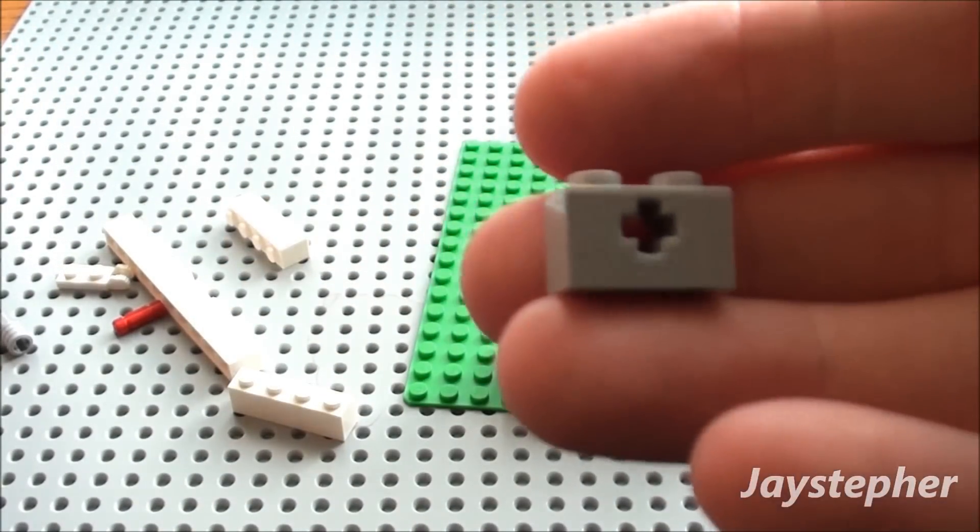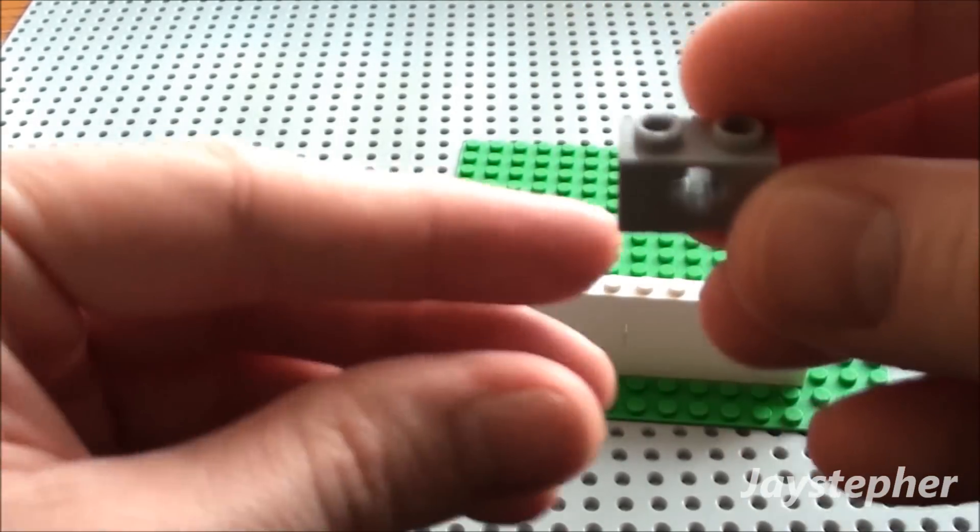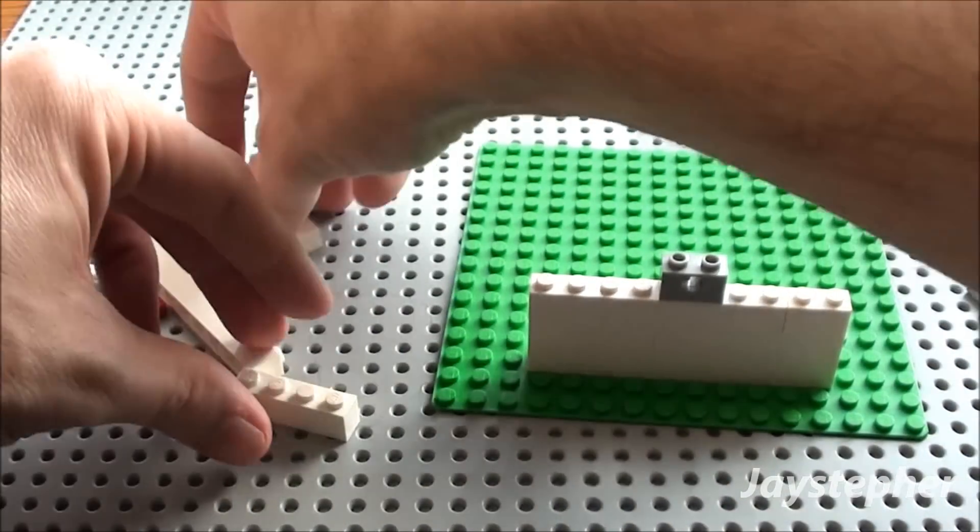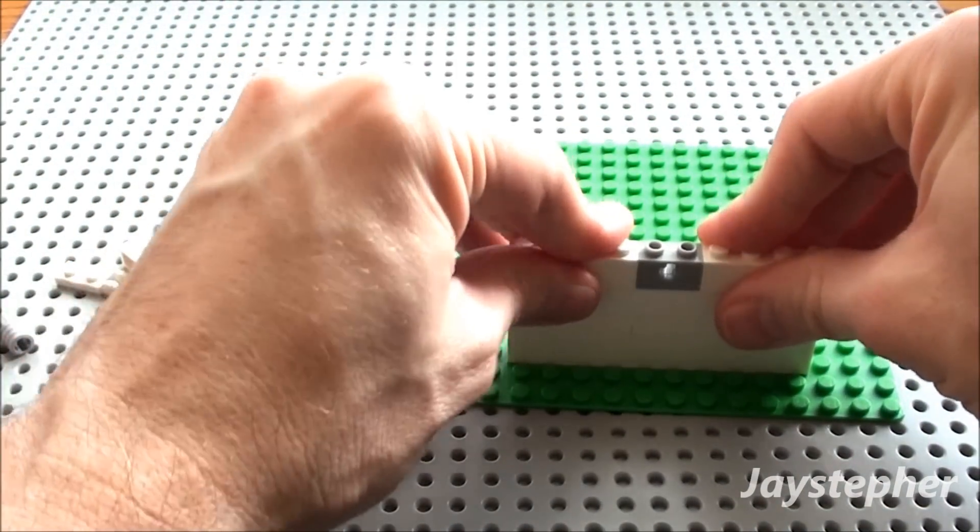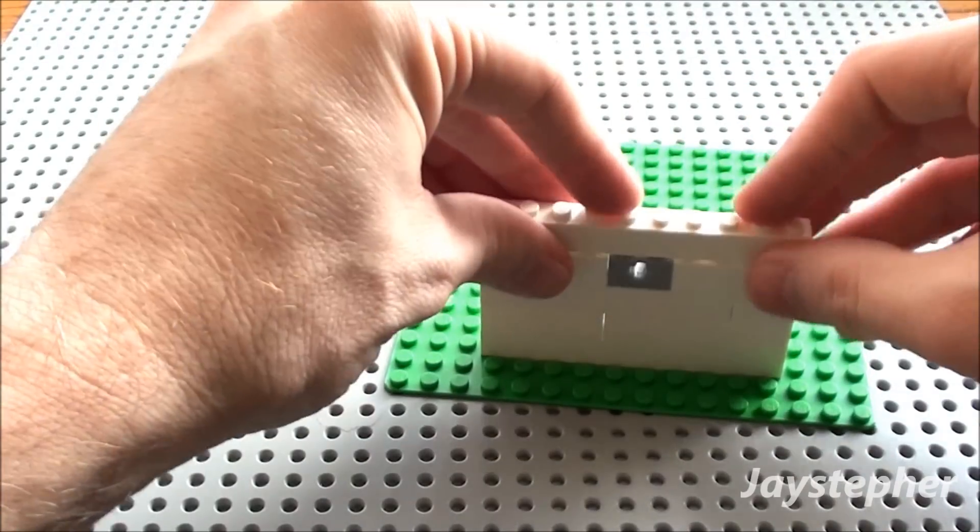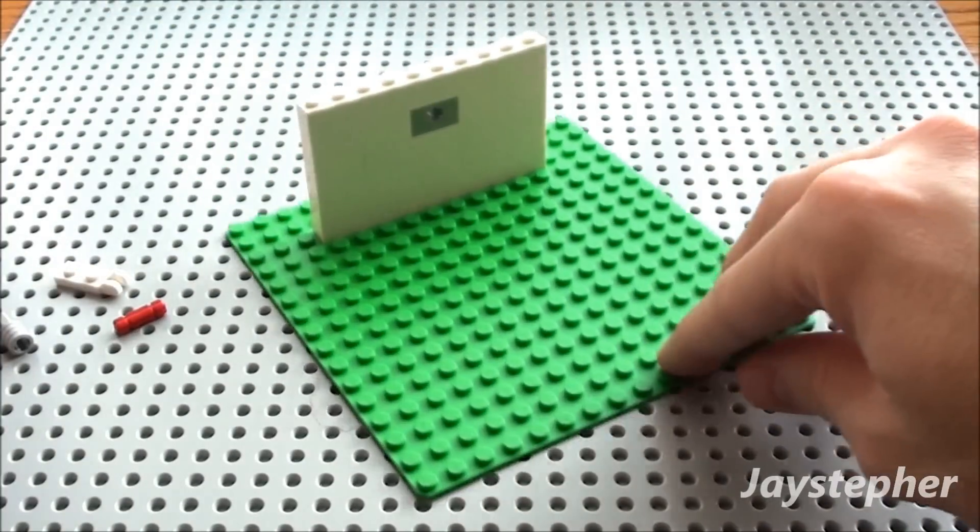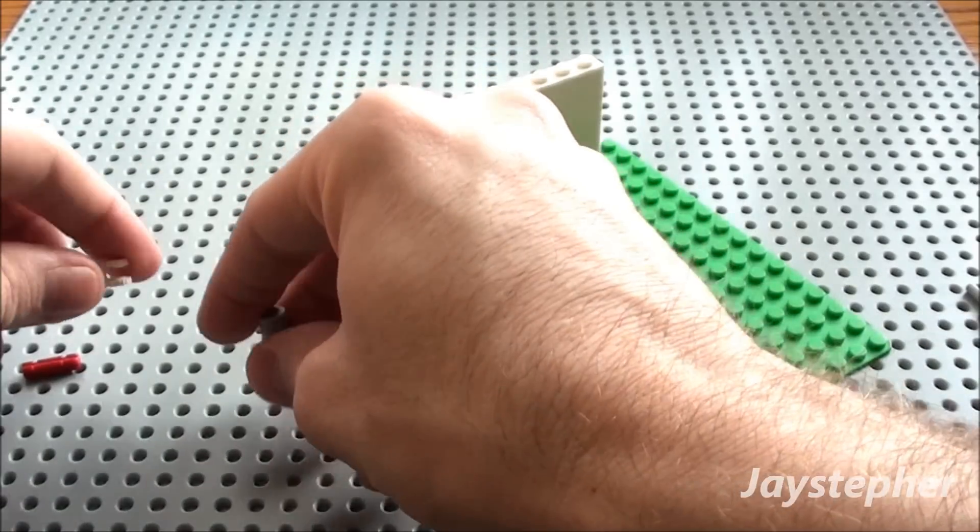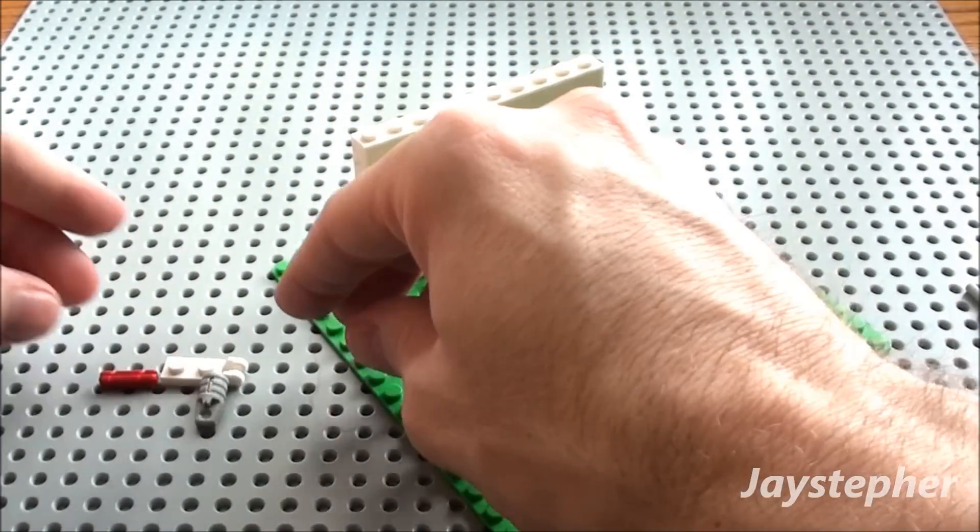Now I'm going to take one of these cross-hold bricks, stick it here in the middle. I'm going to start building this up. I'm going to start putting in the device that will attach our flagpole.